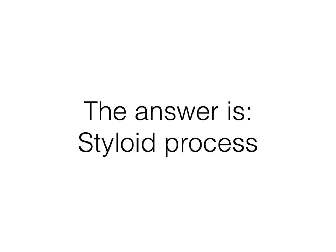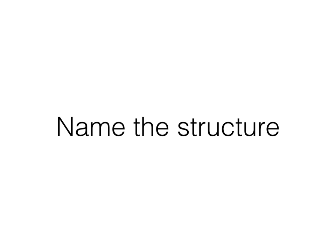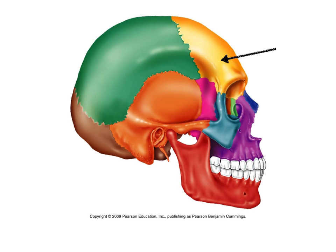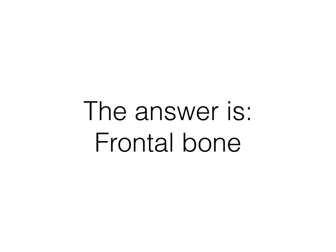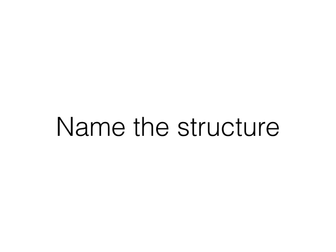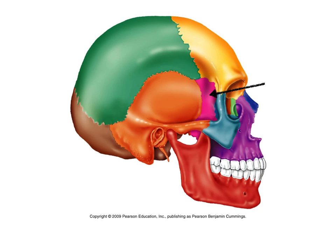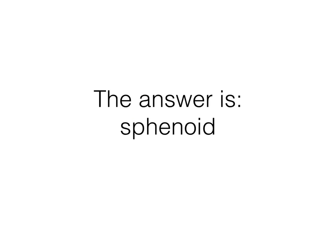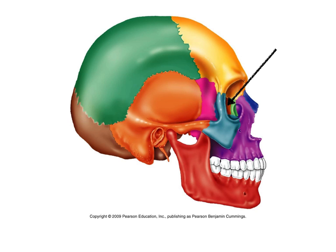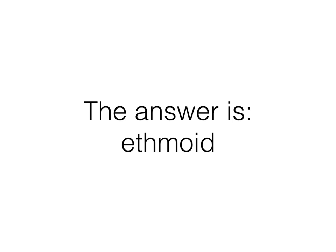That kind of looks like a tip of a stylus. What's the name of this bone? That's the frontal bone. What's the name of this bone? That's the sphenoid bone. What's the name of this bone here — the orange one back in the orbital socket? That's the ethmoid bone.